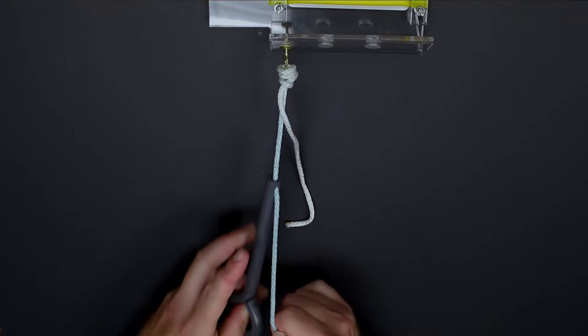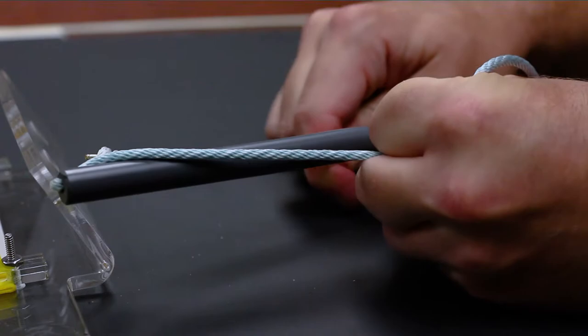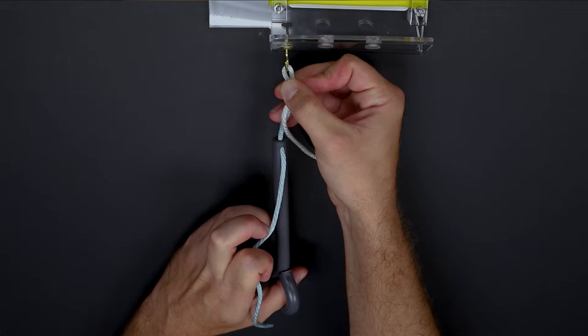We can then secure this against the tissue using our knot pusher to further push it against the tissue and then we can further tighten it, past pointed, for additional tension.